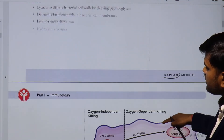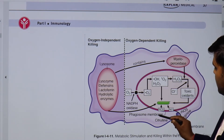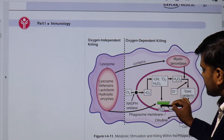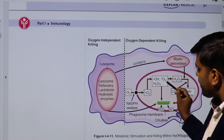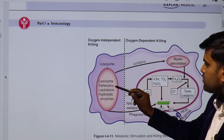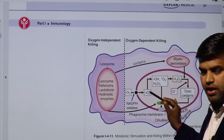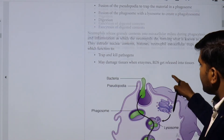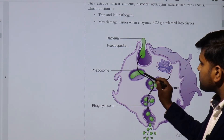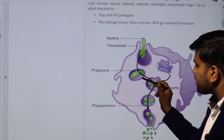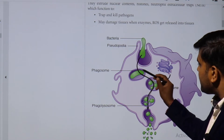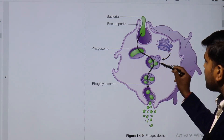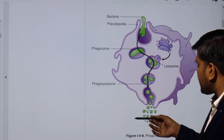Inside the phagosome, bacteria are killed by the respiratory burst — this is oxygen-dependent killing. If the organism cannot be killed this way, the phagosome fuses with the lysosome to form the phagolysosome. Enzymes such as lysozyme, defensins, lactoferrin, and hydrolytic enzymes are poured onto the bacterial membrane and lyse everything. If still unable to kill, lysosomal enzymes complete the digestion.